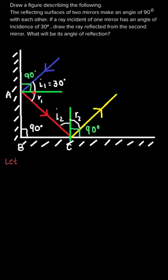The angle of incidence is the angle between the incident ray and the normal, which is 30 degrees. The angle of reflection r1 is also 30 degrees. The ray represented by the red color is the reflected ray from the first mirror, and r1 is the reflected angle from mirror one.